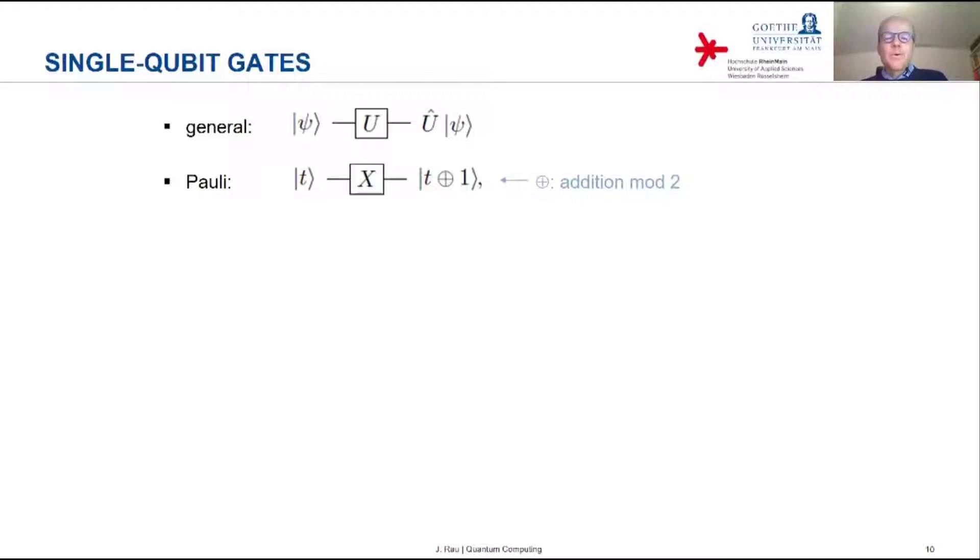So if the input is zero, then zero plus one is one, so the output state is one. If the input state is the basis state one, then the output is one plus one is two mod two is zero. So it flips basis state and that's why the Pauli X gate is the quantum counterpart, the quantum analog of the classical NOT gate.